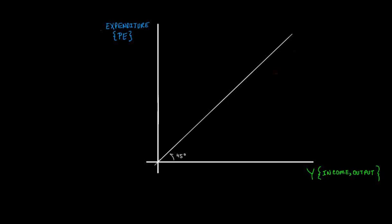This screencast describes the Keynesian cross. The Keynesian cross is a very basic model of how John Maynard Keynes theorized that national income was determined, particularly in the short run. It's also a very basic building block for the IS curve, which shows the relationship between the real interest rate r and national income Y that arises from the market for goods and services.